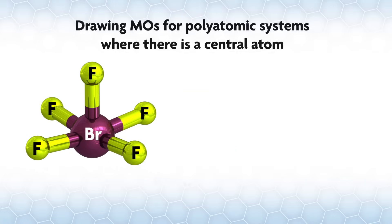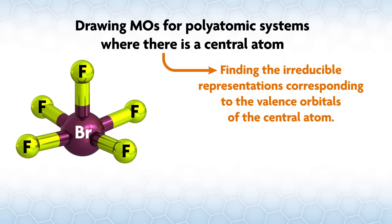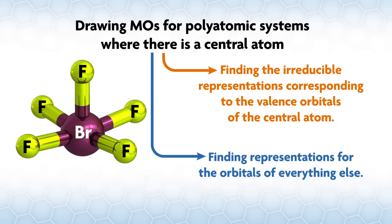We divide the problem of drawing MOs for polyatomic systems where there is a central atom into two parts: finding the irreducible representations corresponding to the valence orbitals of the central atom, and finding the representations for the orbitals of everything else. If you have a system with a central atom, then that central atom will sit on the point that all your symmetry operations go through.